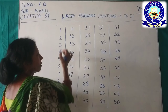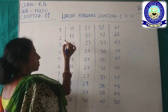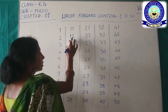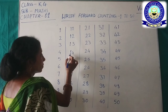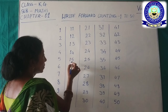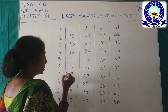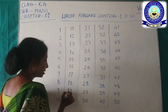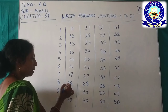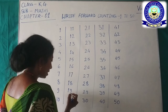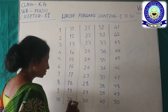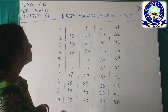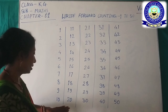One, one — eleven. One, two — twelve. One, three — thirteen. One, four — fourteen. One, five — fifteen. One, six — sixteen. One, seven — seventeen. One, eight — eighteen. One, nine — nineteen. Two, zero — twenty.